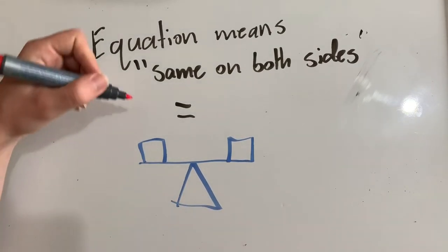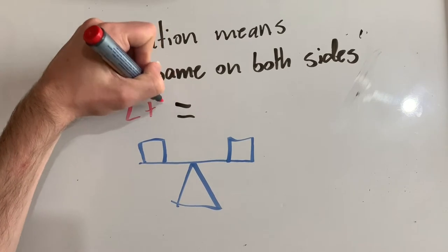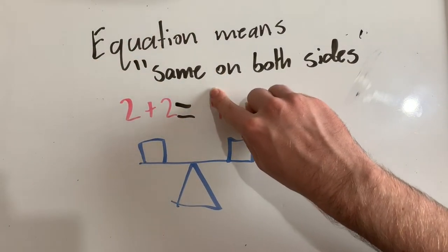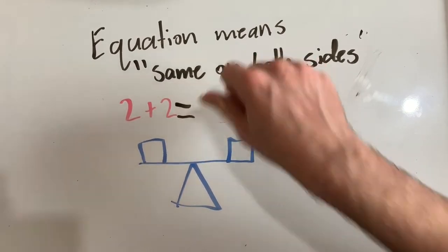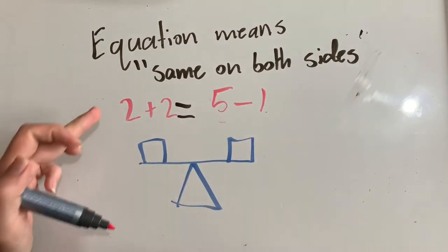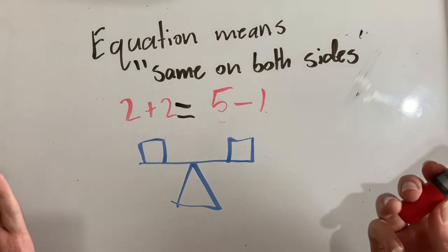For example, two plus two is four. We could also write two plus two as five minus one, because that equals four, that equals four, both sides are still the same.